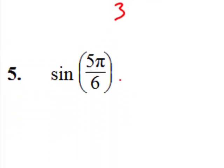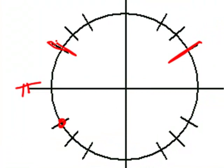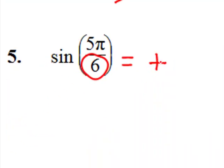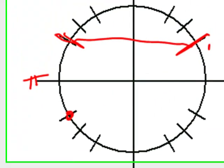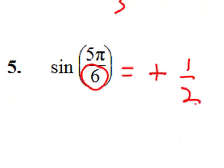Sine of five pi over six. Again, over six. But five pi over six is in quadrant two. And the sine is positive in quadrant two. We know it relates to pi over six in quadrant one. And the sine of pi over six is one half.